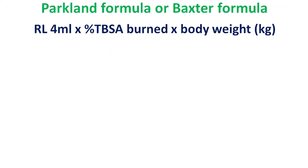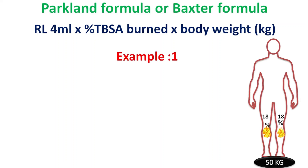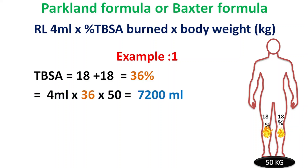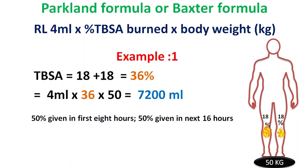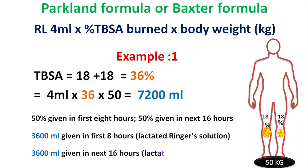For example, both lower extremities are burned: TBSA = 18% + 18% = 36%. Patient weight is 50 kg. Applying the formula: 4 mL × 36 × 50 = 7200 mL. Fifty percent (3600 mL) is given in the first 8 hours, and 50% (3600 mL) is given in the next 16 hours.